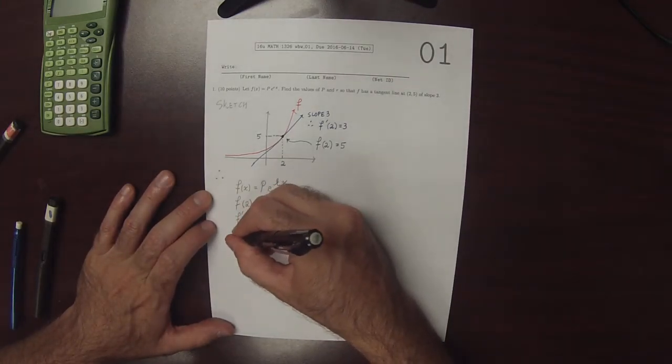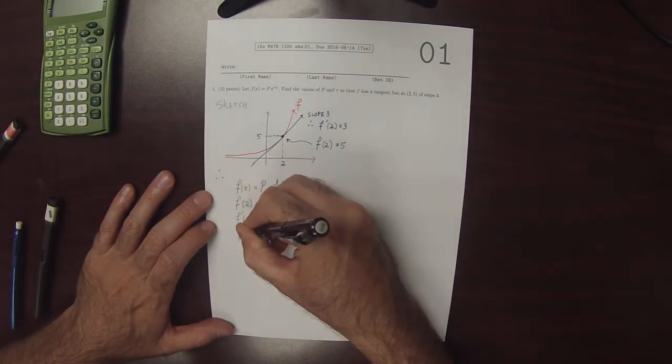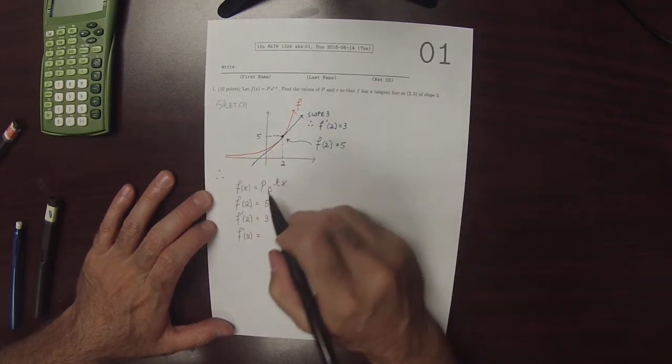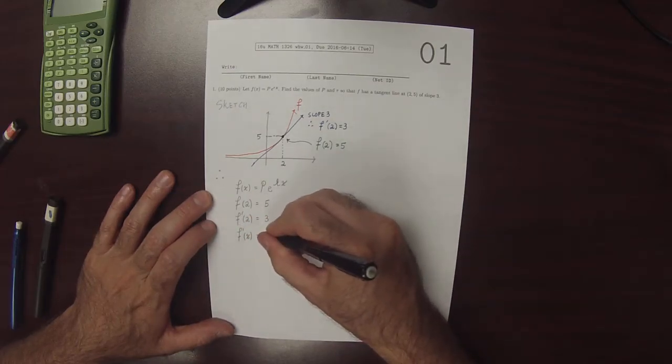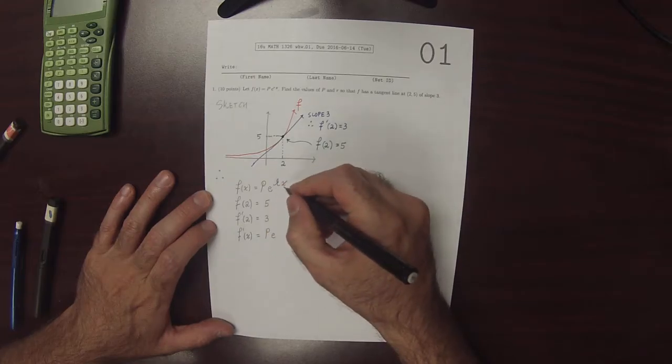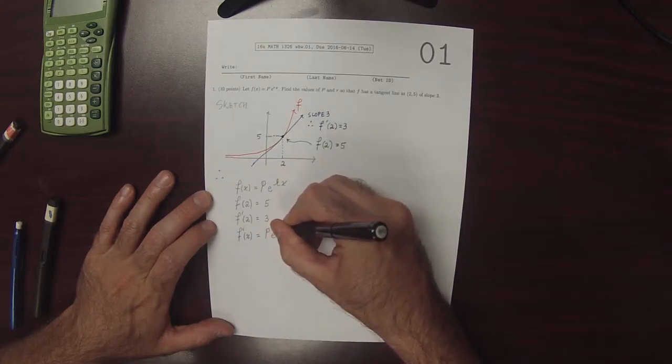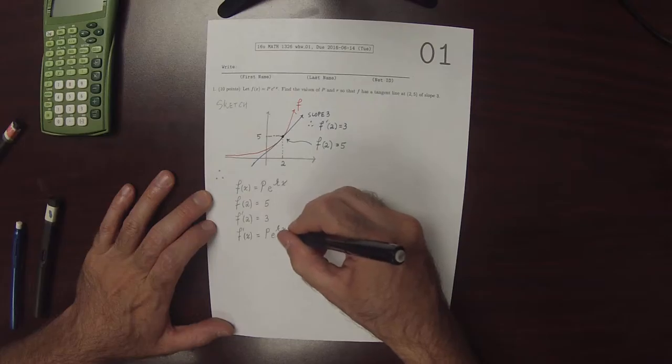Let's compute the derivative. So p is just a constant. So that's p, and then the derivative of the exponential is the exponential again. And then we'll get the derivative of r x for the chain rule.